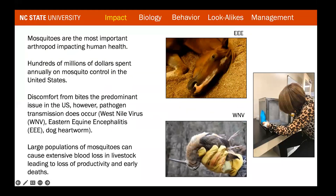I wanted to start the presentation by talking about the huge impact that mosquitoes have on both humans and animals. Mosquitoes are the most important arthropod impacting human health — globally, not just here in the United States. In fact, in 1878, mosquitoes were the first arthropods formally implicated as intermediate hosts of vertebrate parasites. Their greatest notoriety comes from their ability to transmit pathogens that cause diseases: malaria, filariasis, encephalitis, yellow fever, and dengue virus.